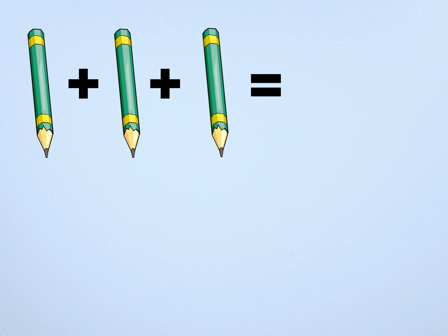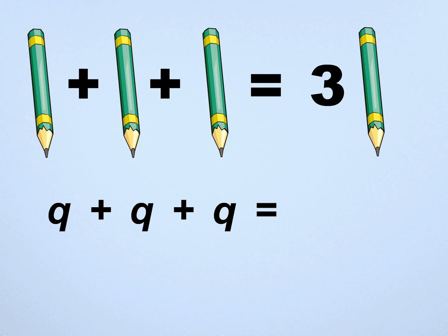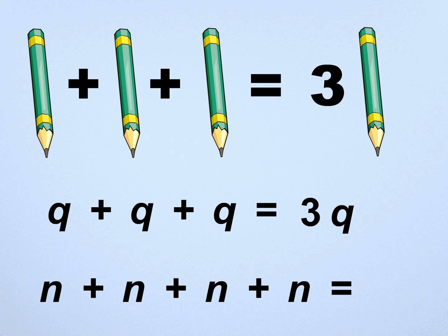Can you guess how many pencils are here? There are three pencils here. Similarly, we say Q plus Q plus Q is 3Q. Can you guess what is N plus N plus N plus N? Yes, 4N.